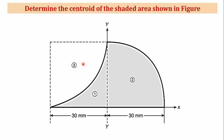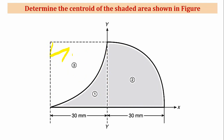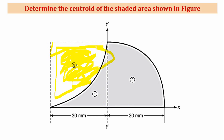We divide the figure into simple shapes. The first is one rectangle, and the second is a semicircle quarter. The total area covers the whole figure, but we subtract the quarter circle because it is not a shaded portion. So: figure 1 is the rectangle, figure 2 is the quarter circle (semicircle quarter), and figure 3 is the quarter circle for which we do deduction.